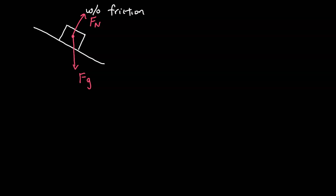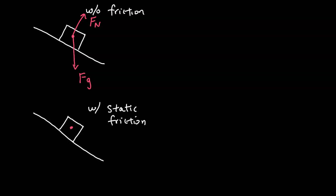Now let's look at one with static friction, meaning the object is not moving. Here we have a box on an incline that is not moving. I'll start with gravitational force, then include the normal force 90 degrees to the surface, and then because there's static friction I'll include an arrow. The direction is opposite to how the box would slide if there were no friction — so since it would slide down, static friction is going up the ramp.